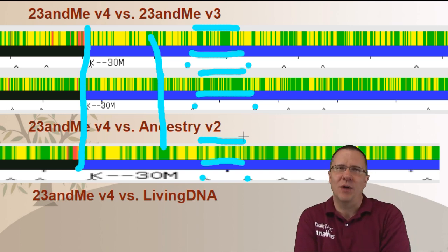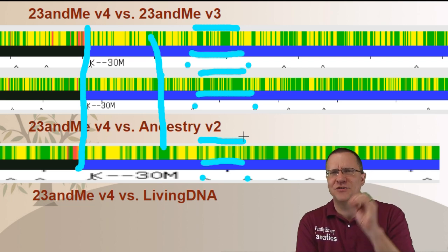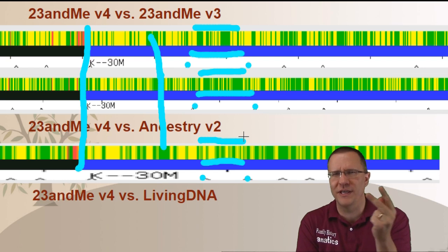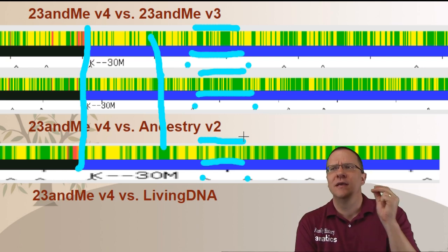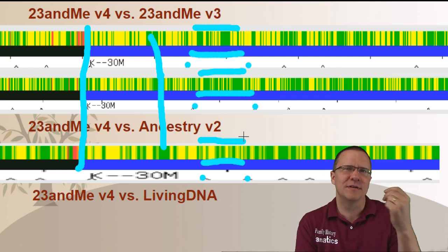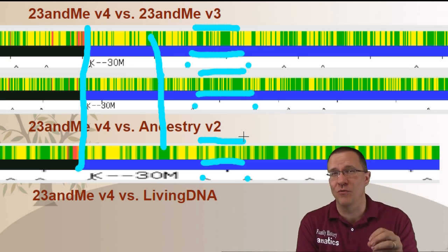Now where this can be a problem is if you had a small segment in visual phasing where there was actually two recombinations really close together. If you're using different companies kits that don't have as much overlap you may miss where those recombination points are.